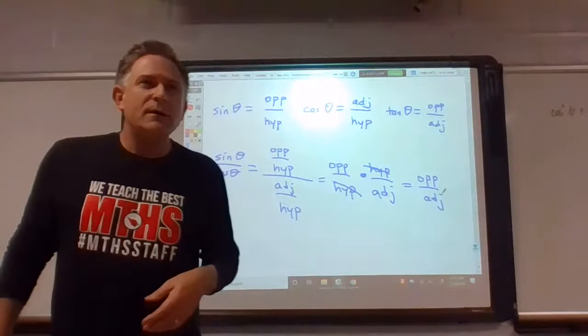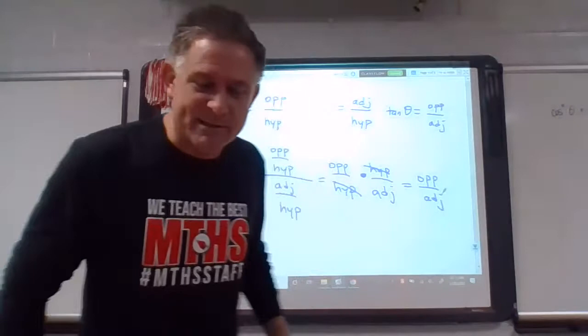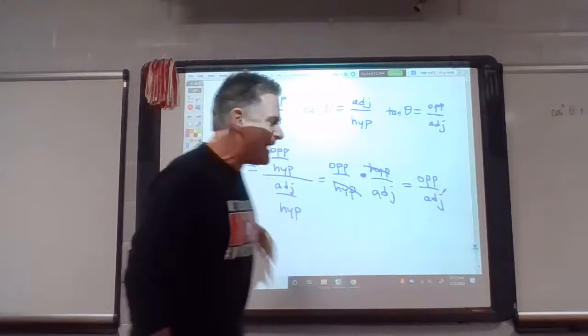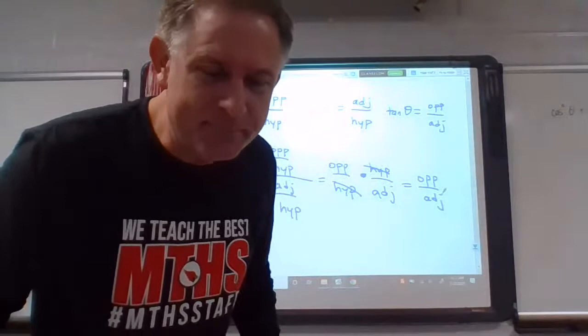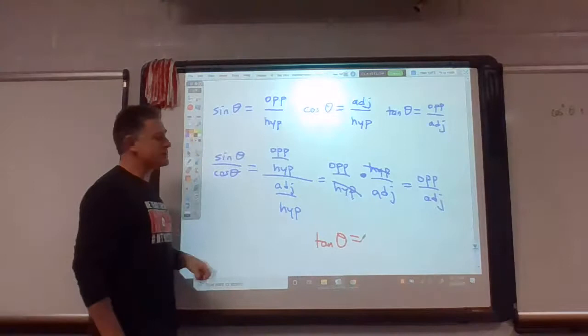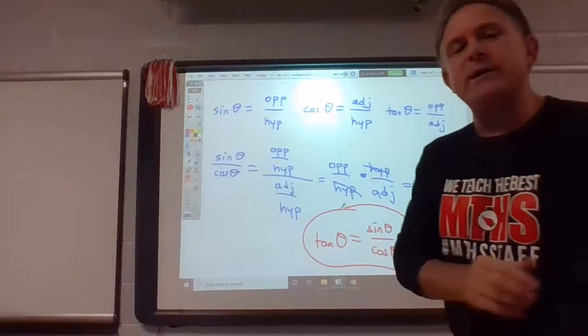Look what awesomeness happens right here. Here's what I've just shown to you. I have shown you that sine over cosine reduces to opposite over adjacent. But wait, you already know something that's opposite over adjacent. If tangent equals opposite over adjacent and so does this, they got to be equal to each other. So what we just showed is that tangent, and we're going to like this in red, equals sine over cosine.